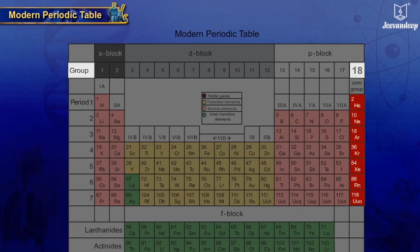Group 18 on the extreme right of the periodic table contains inert gases. There, the outermost shell contains eight electrons.